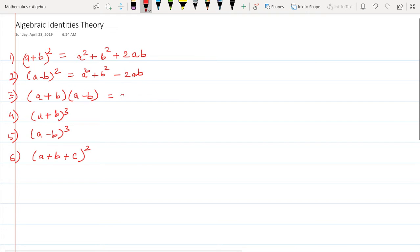Similarly, this becomes a² - ab + ab - b², and this is equal to a² - b².